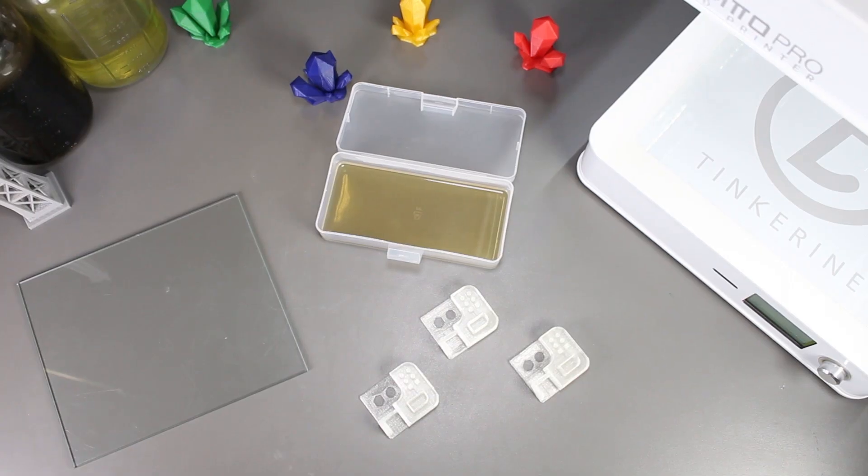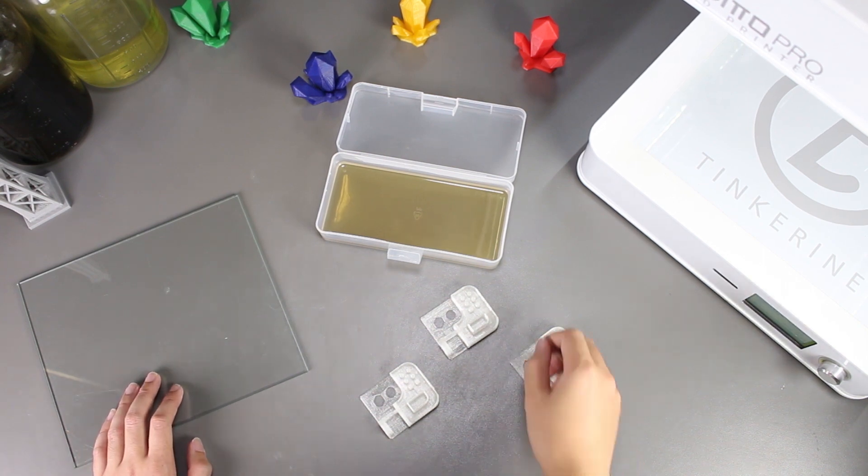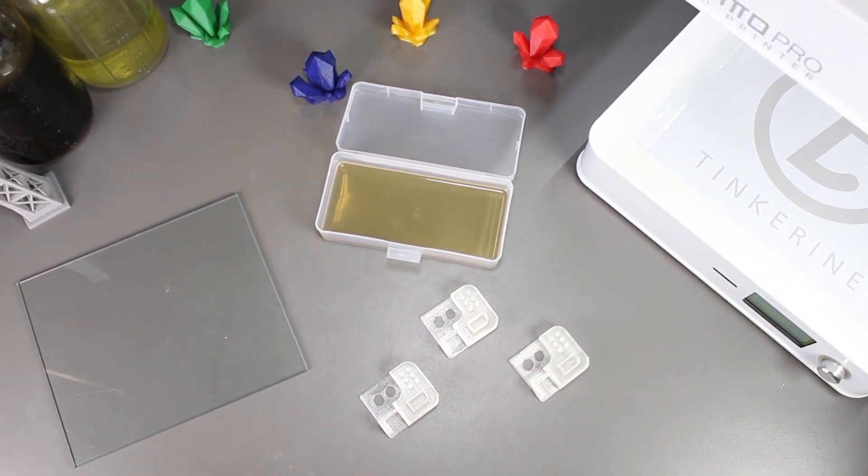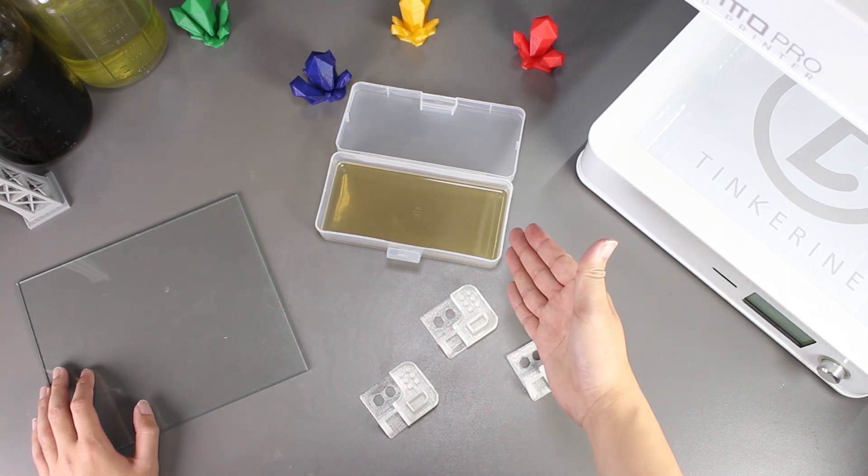Well, there we have it. We tried sugar water as a bed adhesive and I must say it works really well. The only hard part is applying it evenly onto the print bed. Our right corner didn't have a lot of solution and it caused lifting in all three prints. Other than that, I would say this is a pretty good bed adhesive.